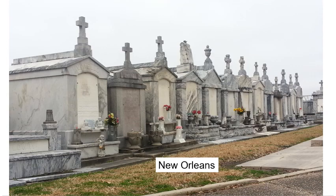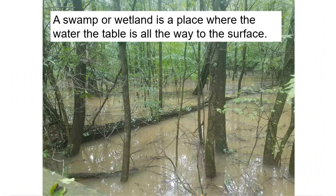In New Orleans, the water table is so high that people can't even be buried below ground. They have to put people in chambers called a crypt or mausoleum above ground because you can't bury somebody in water — you'd start digging down a few feet and suddenly you're in a puddle. A swamp or wetland is a place where the water table is all the way to the surface. During rainy times, the water table comes all the way up and the ground is saturated to the surface, while other times of year the water table drops back down.